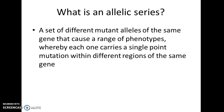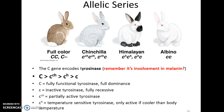So what is an allelic series? An allelic series is a set of different mutant alleles of the same gene that cause a range of phenotypes, whereby each one carries a single point mutation within different regions of the same gene. A really classic example that we see in the animal world is a coat coloring example, and this ties into earlier content about albinism. We learned about the enzyme tyrosinase and how it is essential in converting the amino acid tyrosine to the pigment melanin.